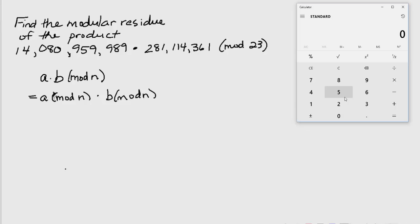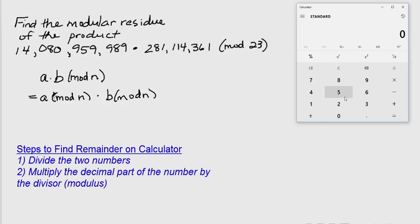Now, some calculators will actually have a modulus function, but if you don't have one of those, the easiest thing to do to find the remainder is divide the number by the modulus, and get rid of the whole number part, just leaving the decimal behind, and multiply the decimal part by the modulus to see what the remainder was.